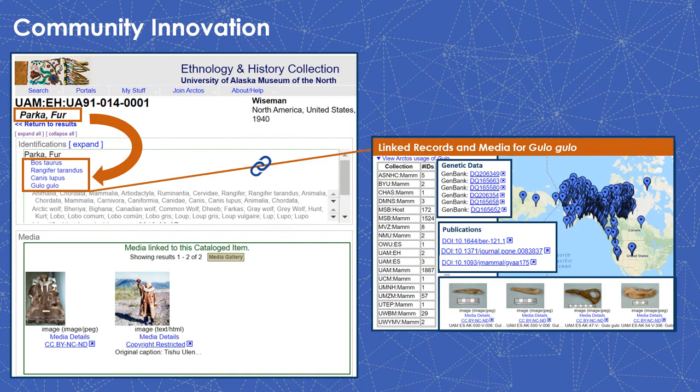For instance, cultural collections can add scientific names to the identifications of their objects, allowing the records to be useful for both ethnographic and biodiversity research. Likewise, paleontology collections have borrowed sensitive data practices from cultural collections when additional data reduction measures were needed to meet U.S. federal and private land regulations.